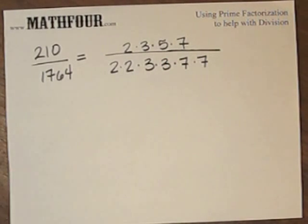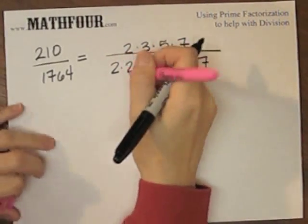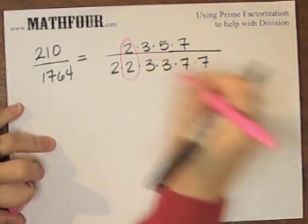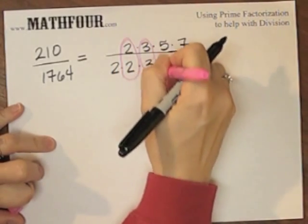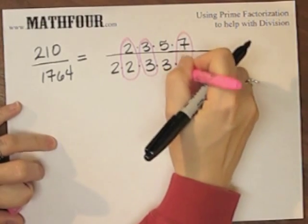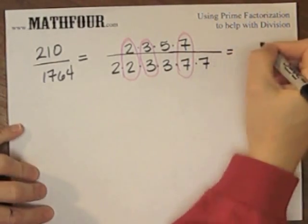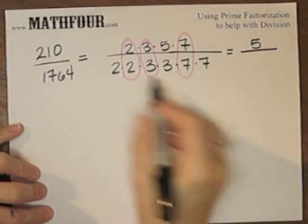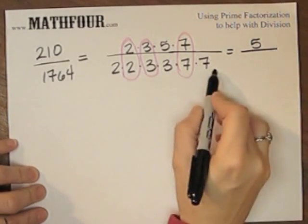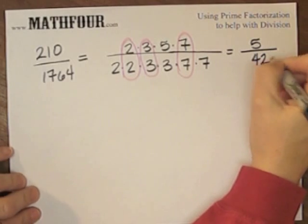Now you can notice here that we've got some matching bits: 2's, 3's, and 7's. We are left with the 5 on top and we're left with 2 times 3 is 6 times 7 is 42 on the bottom.